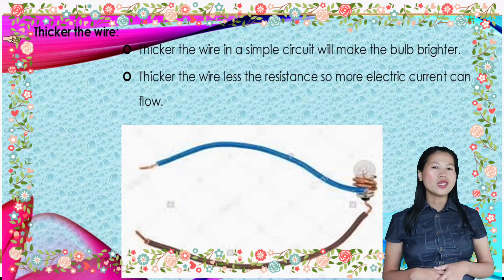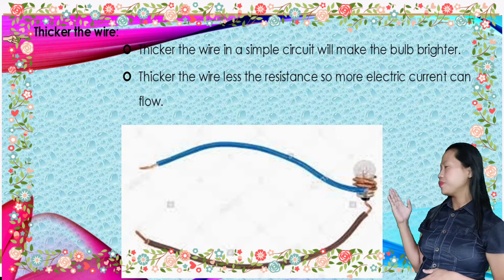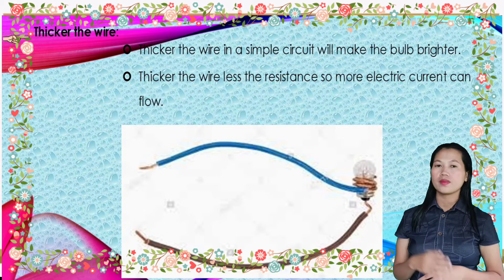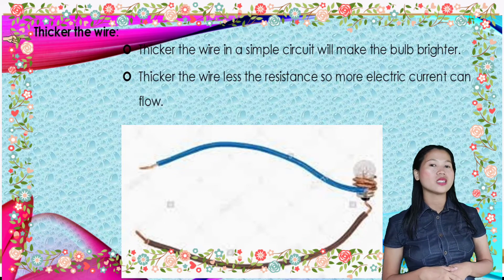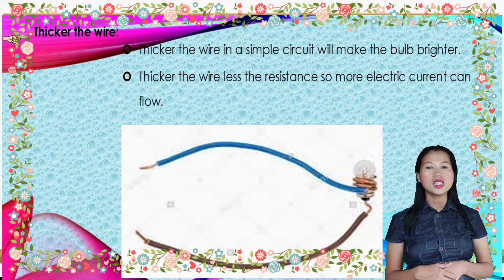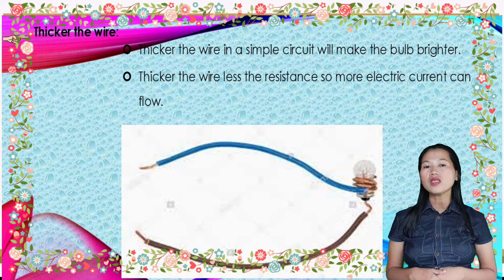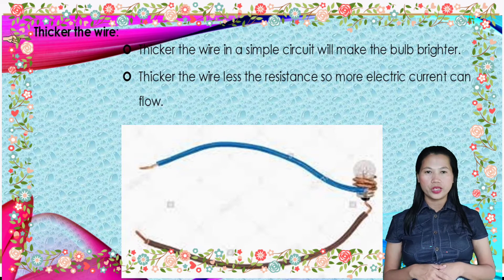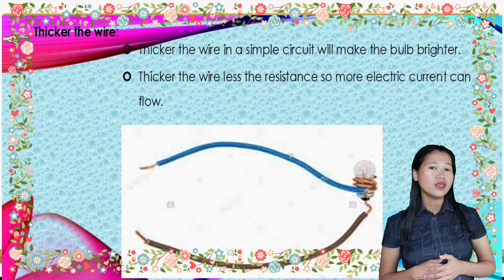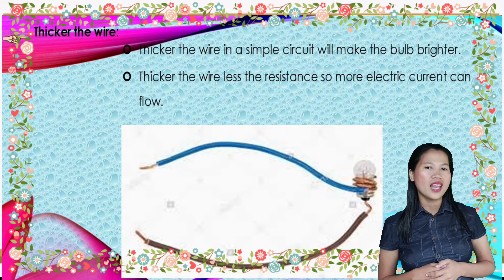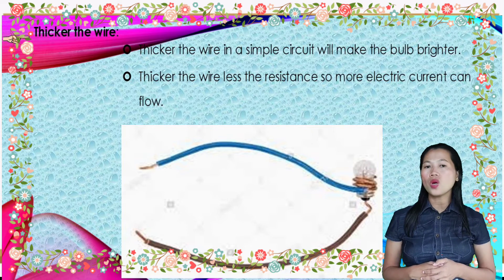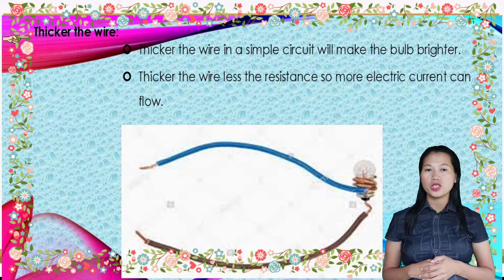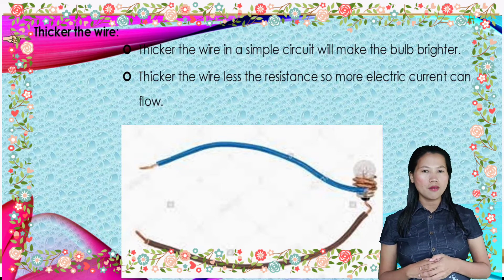Thicker wire: using a thicker wire in a simple circuit will make the bulb brighter. The thicker the wire, the less the resistance, so more electric current can flow.